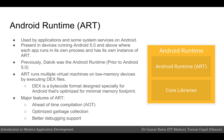Next comes the Android Runtime, also known as ART, which is a managed runtime used by applications and some system services. For devices running Android version 5.0 or higher, each app runs in its own process and with its own instance of the Android Runtime. Prior to Android version 5.0, Dalvik was the Android Runtime. If your app runs well on ART, then it should work on Dalvik as well, but the reverse may not be true.